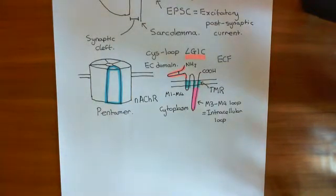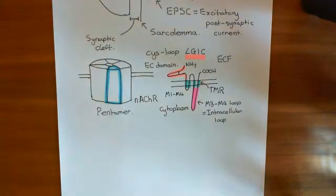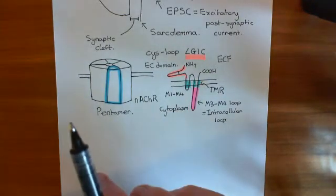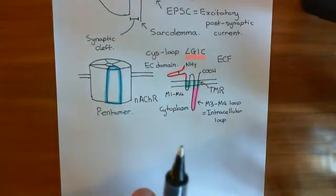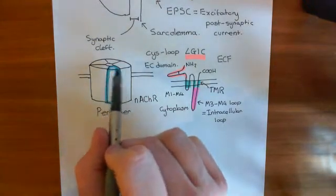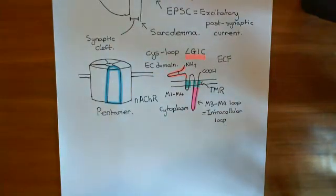What we now want to discuss is how you actually assemble a nicotinic acetylcholine receptor. What would have been really simple is if there was just one type of this protein — just one gene which coded for the nicotinic acetylcholine receptor subunit and then you just used that gene five times, put it together, and that was the nicotinic acetylcholine receptor. It's not like that, I'm afraid.